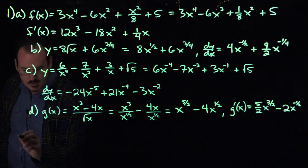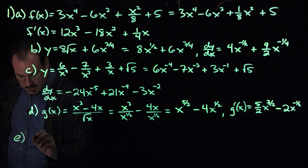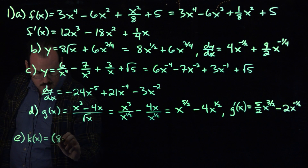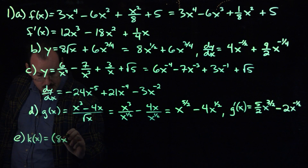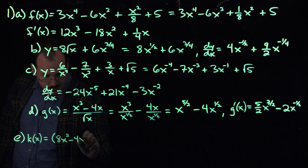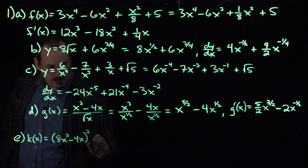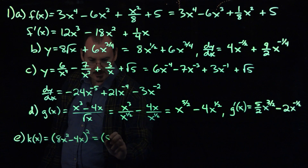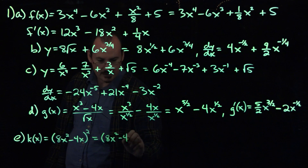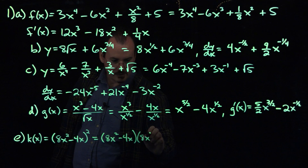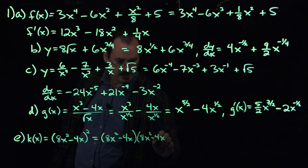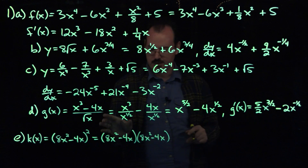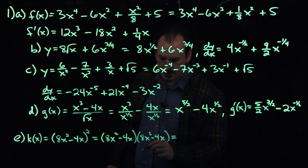Okay, the last one, part e. We've got a binomial squared. This doesn't look like a power function as written, so we're going to have to do something to it before we can take the derivative. In this case, we're going to square it — that means writing the thing two times and using FOIL. So we get 8x squared minus 4x, times 8x squared minus 4x.